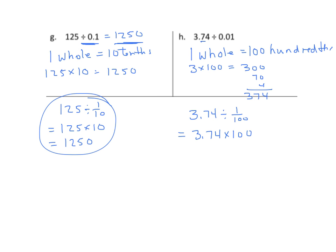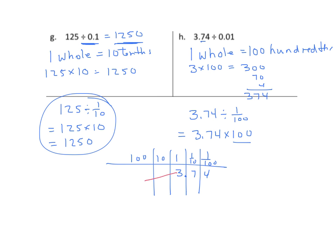We can relate this right back to the place value charts from the beginning of the year. We have our hundredths, tenths, ones, tens, hundreds. When we start with three and seventy-four hundredths and multiply by one hundred — that's ten squared — each digit moves over two decimal places. So the three goes from ones to hundreds, the seven goes from tenths to tens, and the four hundredths go to the ones place, giving us three hundred seventy-four.